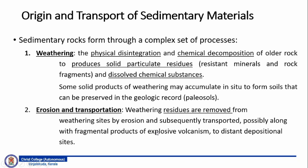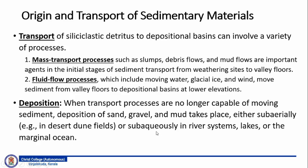The second process, as we have mentioned, is erosion and transportation, which involves the weathering residues being generally removed from the weathering sites by erosion and subsequently transported — possibly along with fragmented products of explosive volcanism — to distant depositional sites. The transport of siliciclastic detritus to the depositional basins can involve a variety of processes. Transportation could be mass transport processes or fluid flow processes. Mass transport processes include slumps, debris flow and mud flow, which are important agents in the initial stages of sedimentary transport from the weathering sites to the valley floor.